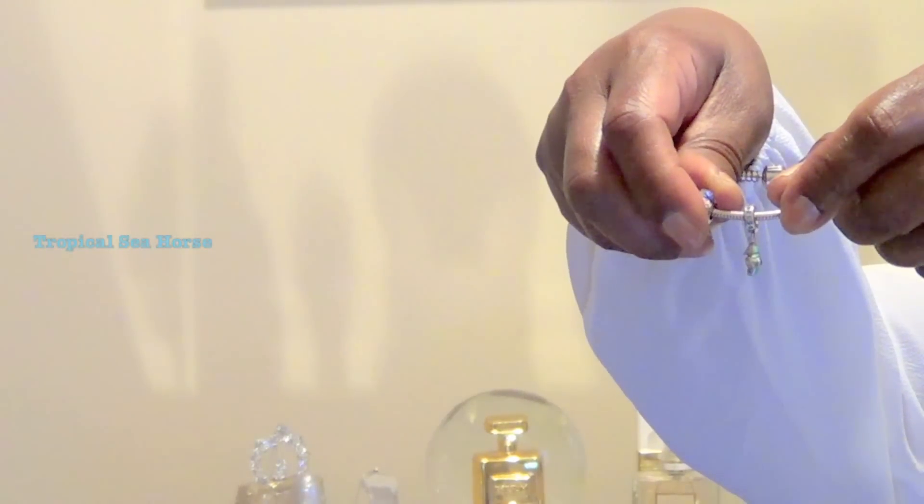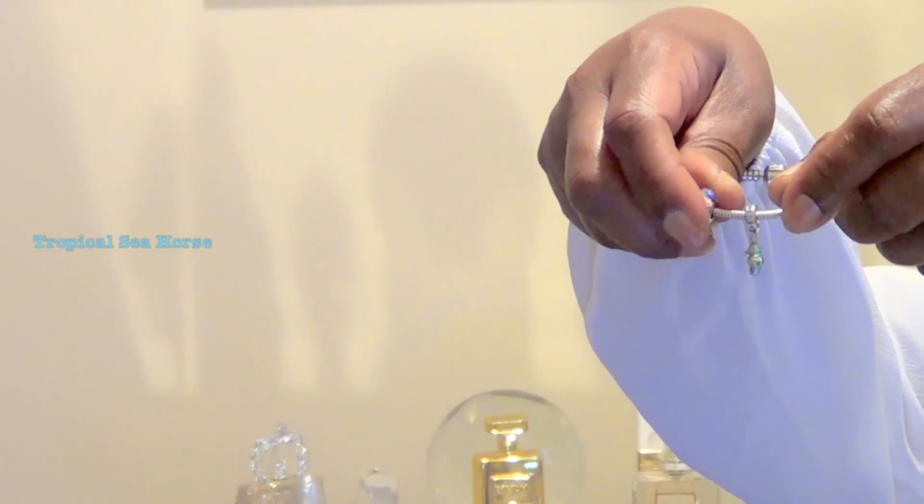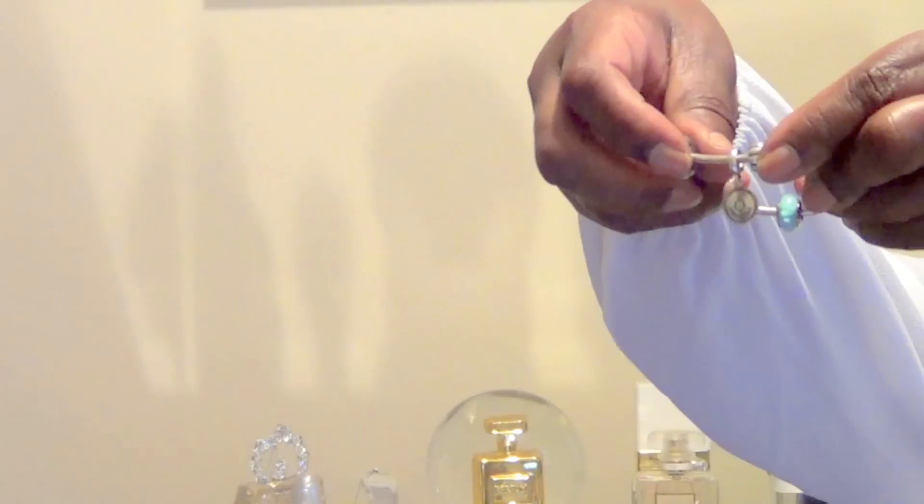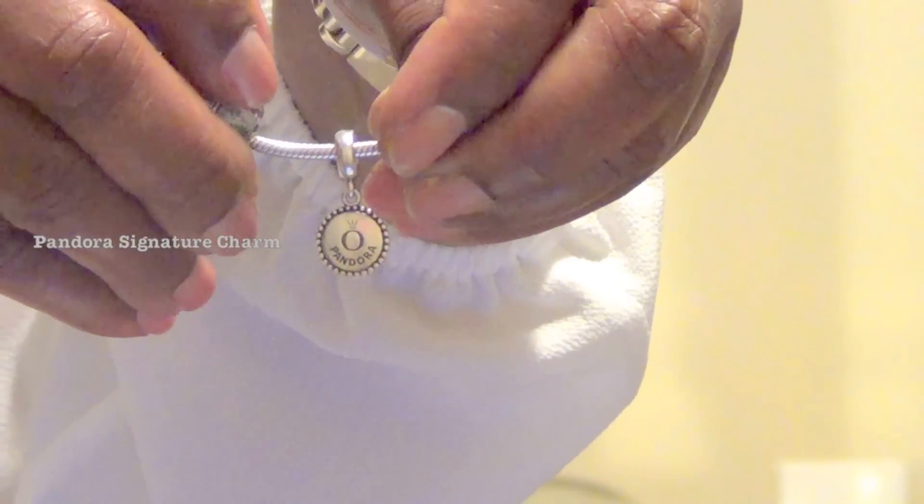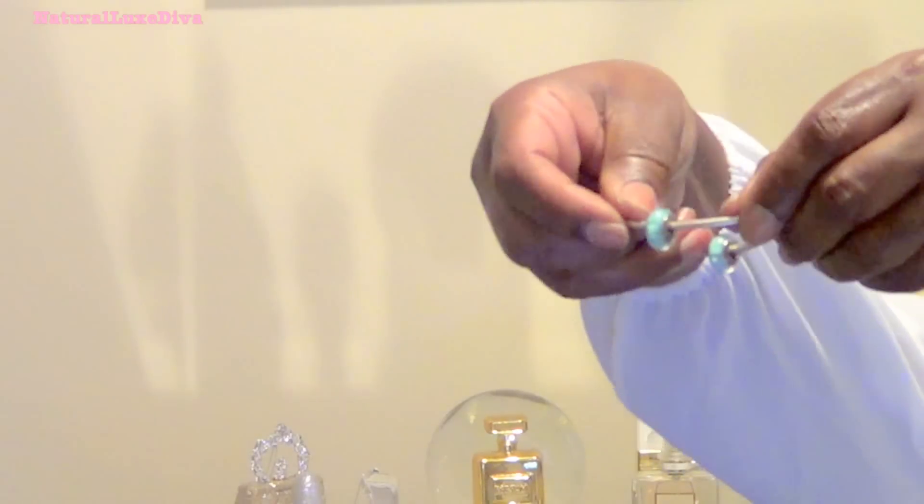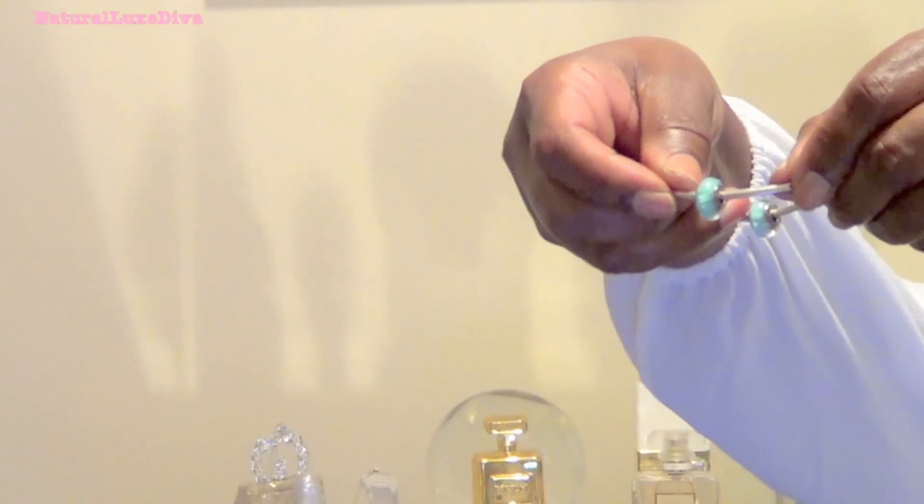This is the tropical seahorse in aqua and white. Tropical sea glass. This is the Pandora signature charm. Another one of the ribbed clips. And on the end the turquoise looking glass.